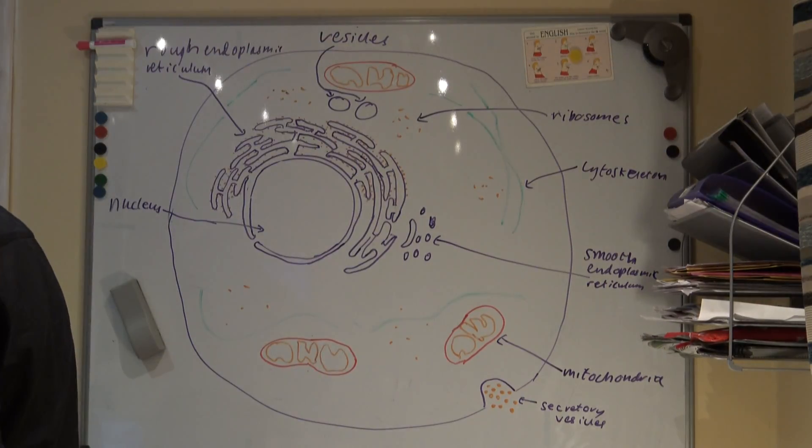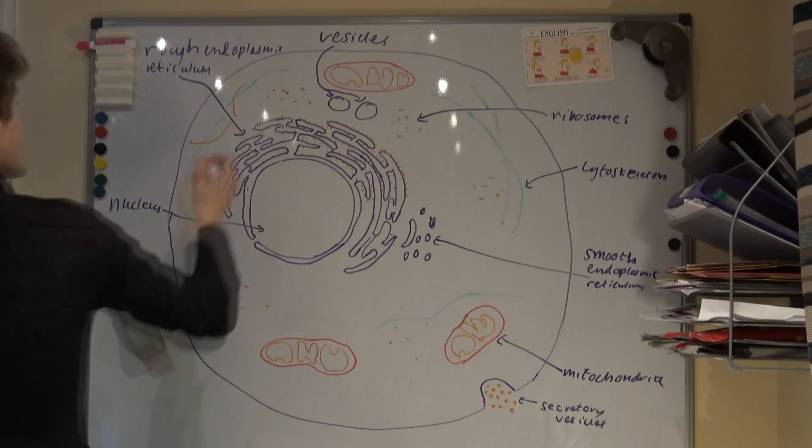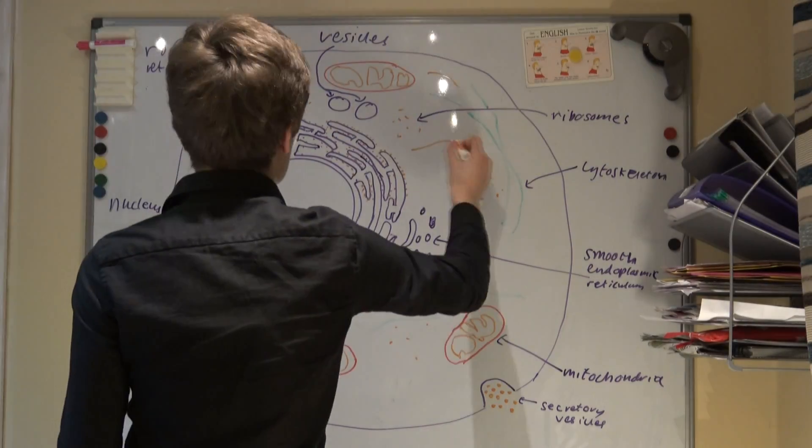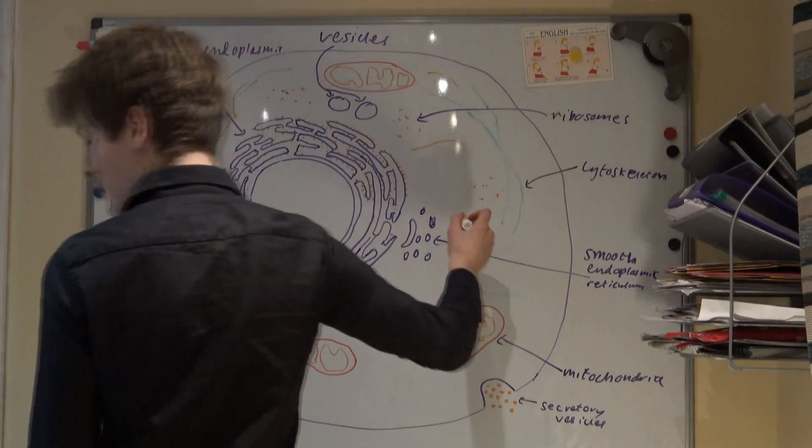Microfilaments, which are contractile fibers formed from the protein actin. These are responsible for cell movement and also cell contraction during cytokinesis, which is the process in which cytoplasm of a single eukaryotic cell is divided into two daughter cells.